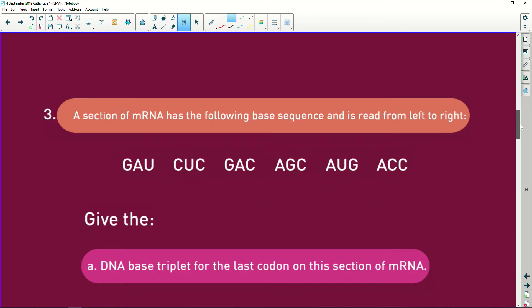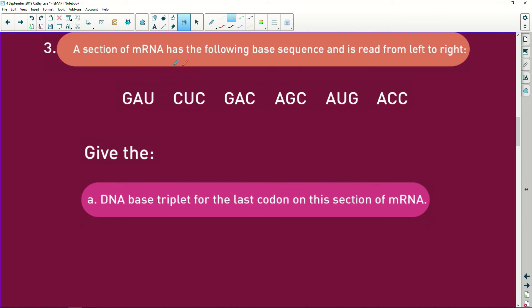Next one: a selection of messenger RNA of the following base sequences is read from left to right. So let's number them—that's one, two, three, four, five, six. It says give the DNA base triplet for the last codon, so it's for this one.